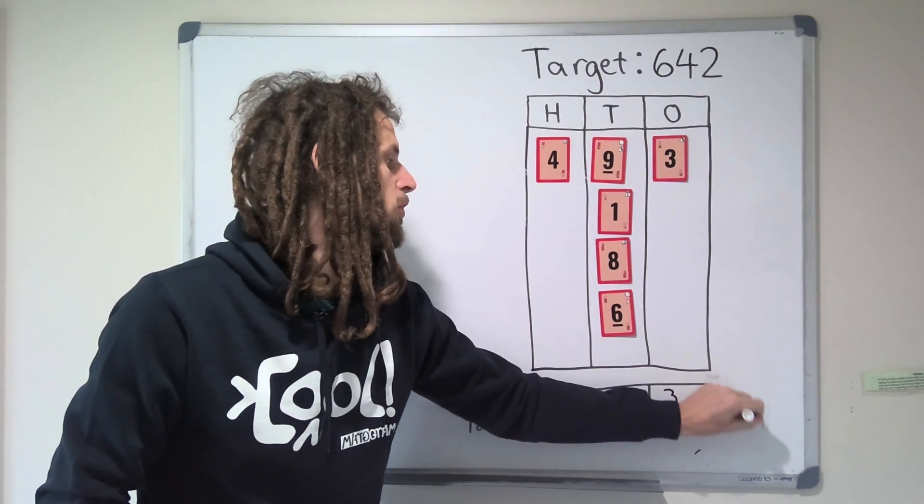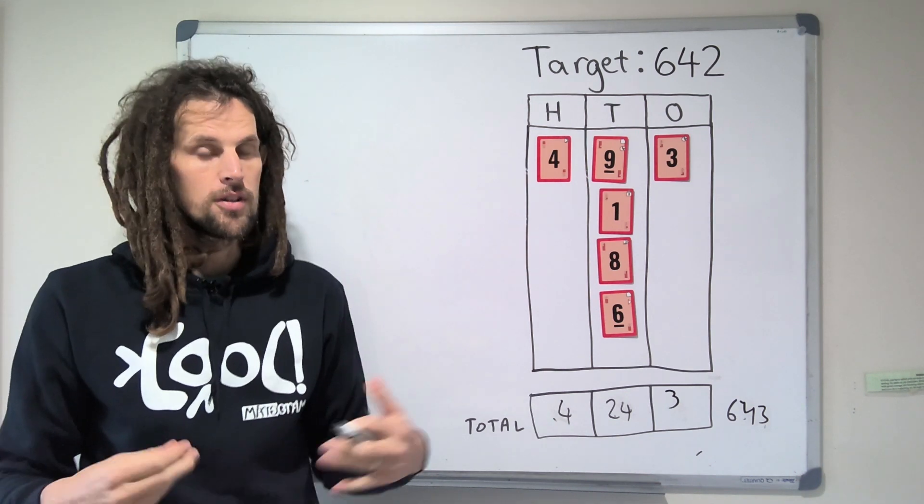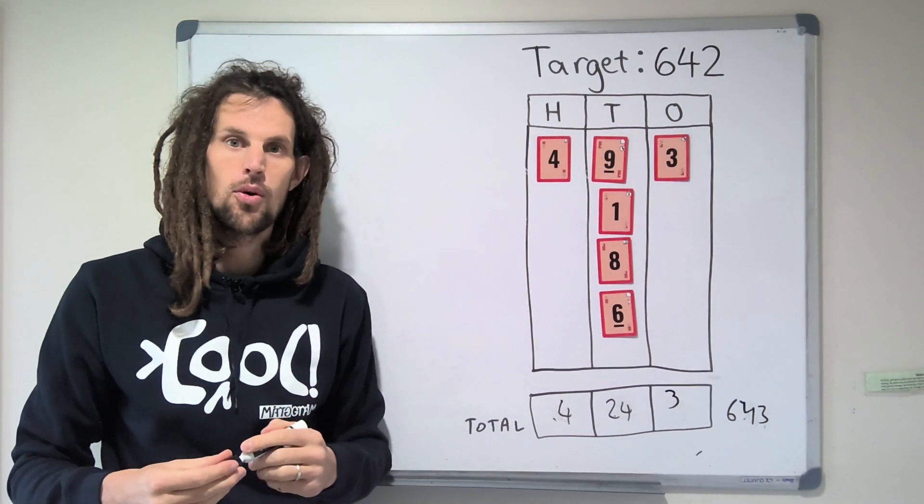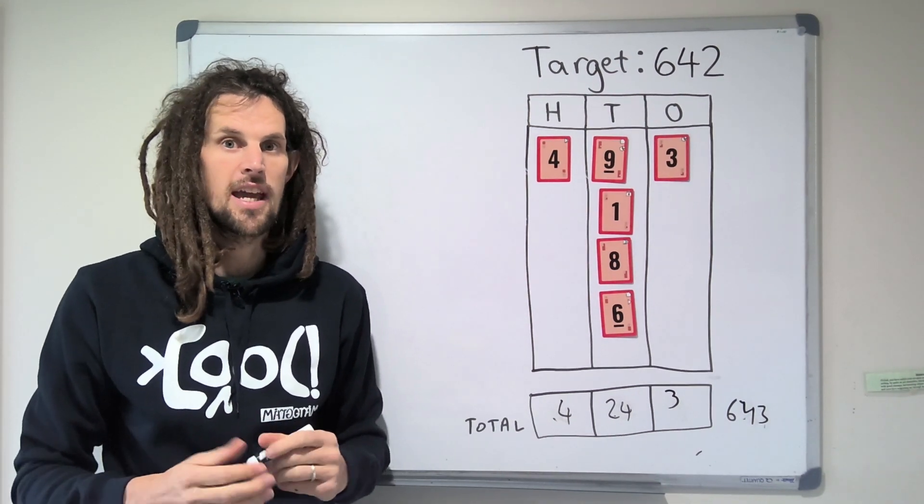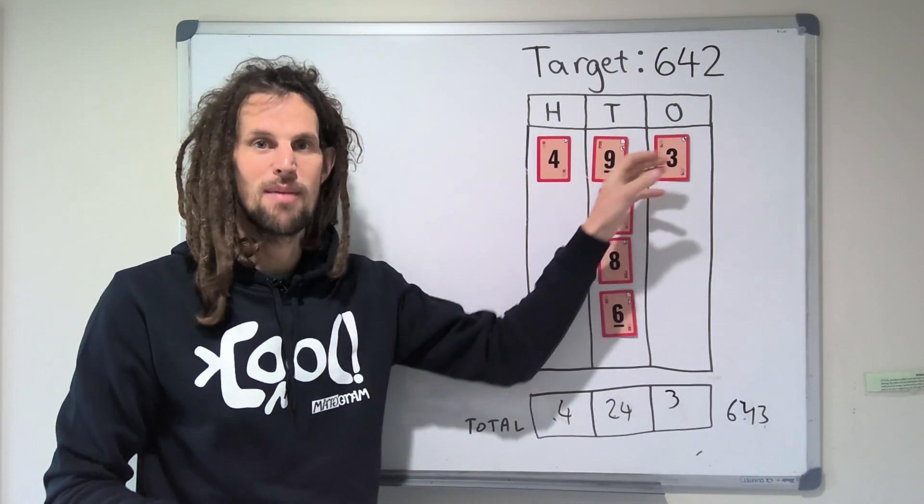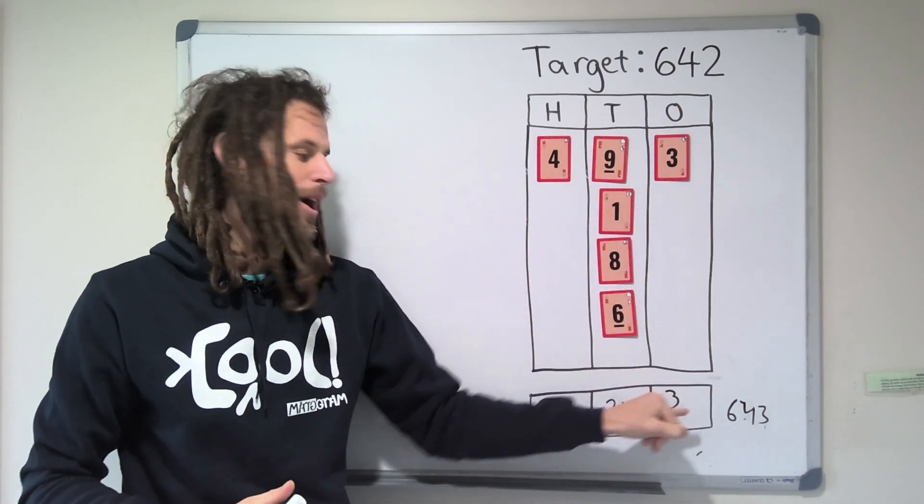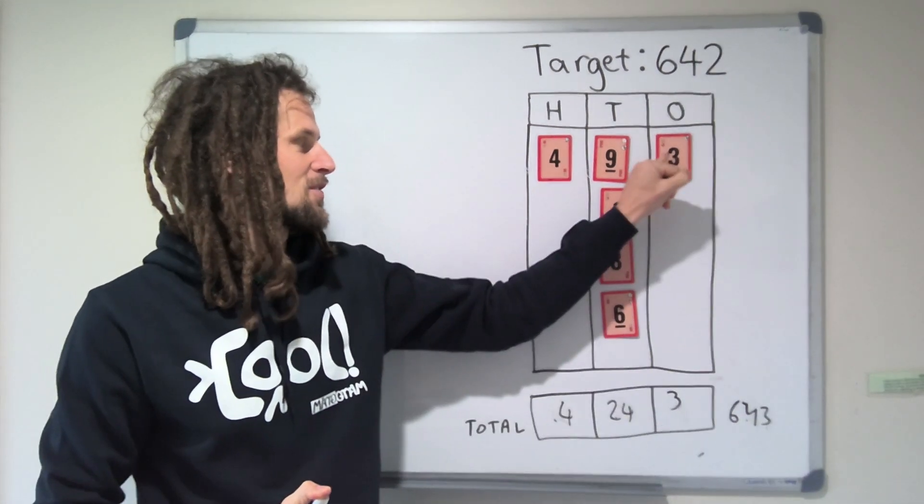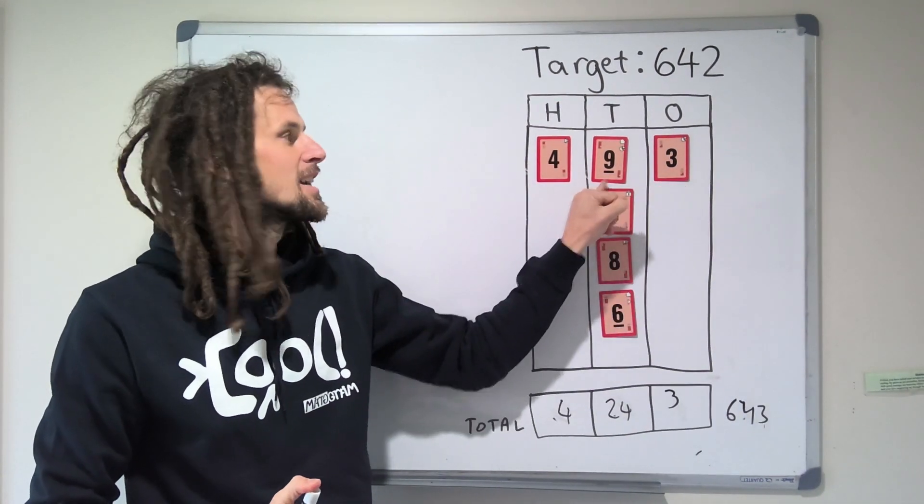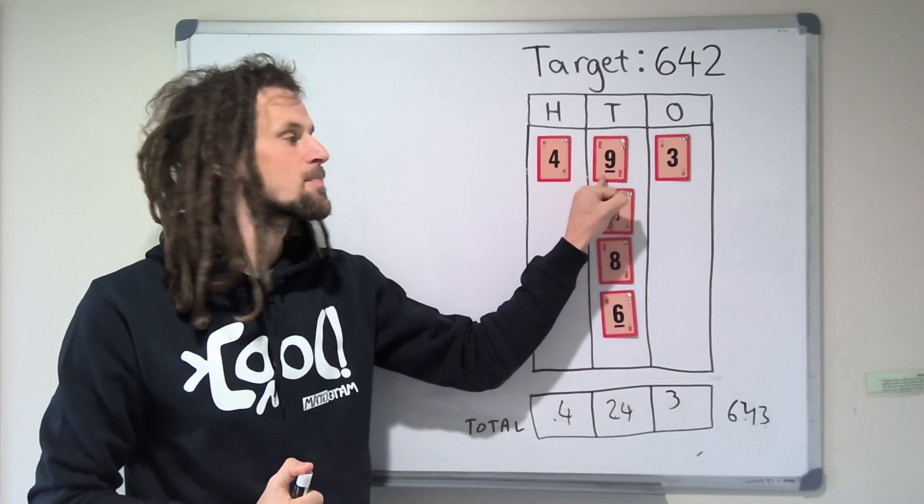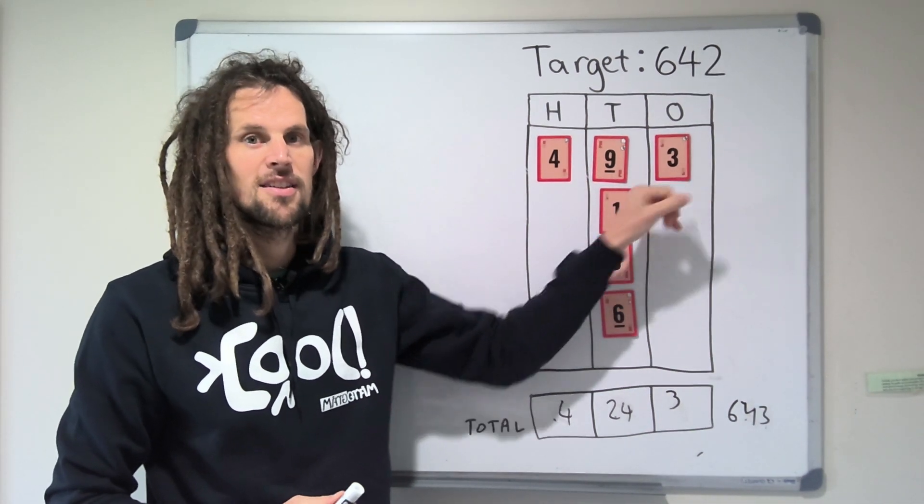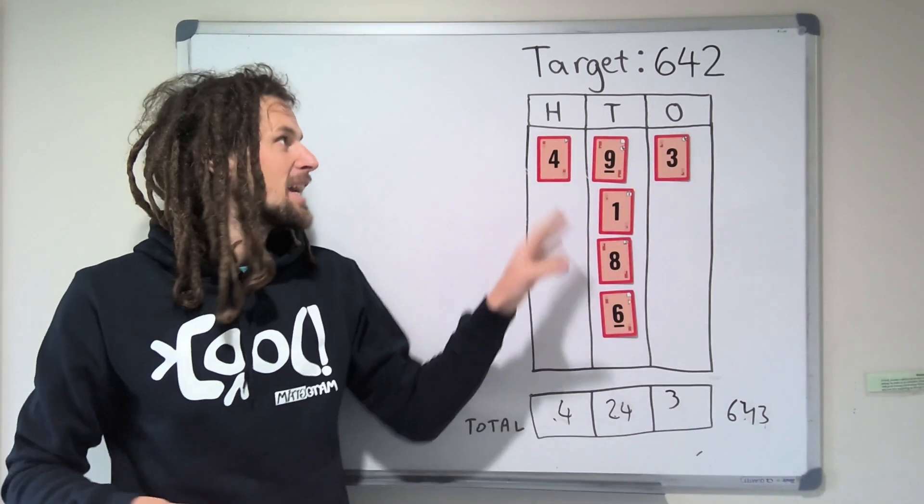And so we've gotten within 1 of the target. And you know you've nailed it. If you're within 4 of the target, that's as close as you can get. It's just this weird thing that any adjustment you make here will change the value by a multiple of 9. Because if we put, say, a 3 over here, we're making this one 30 bigger and making this 3 less. So there's a difference of 27. Anyway, that's a nerdy thing.